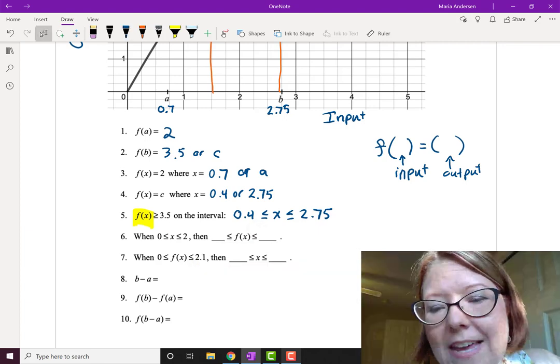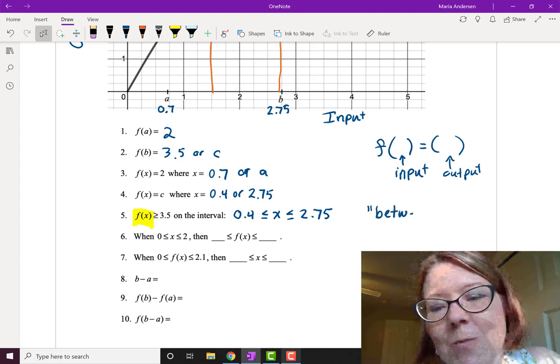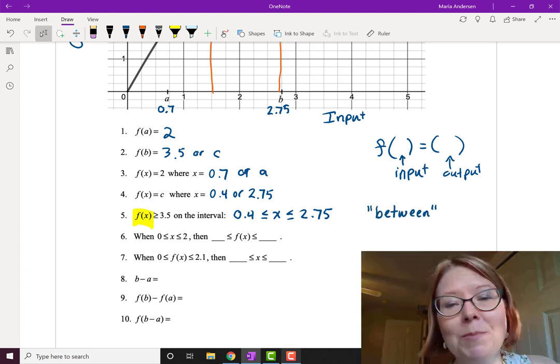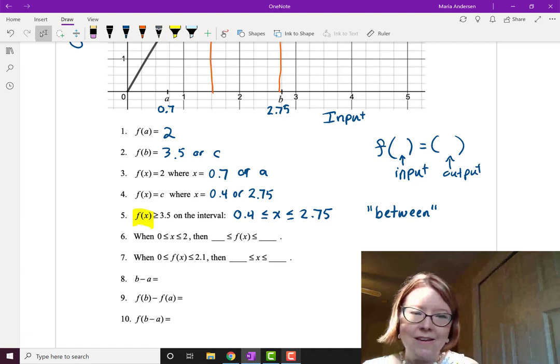We write that as 0.4 is less than or equal to x is less than or equal to 2.75. You can call this a between expression. It's one where the x is between two values.